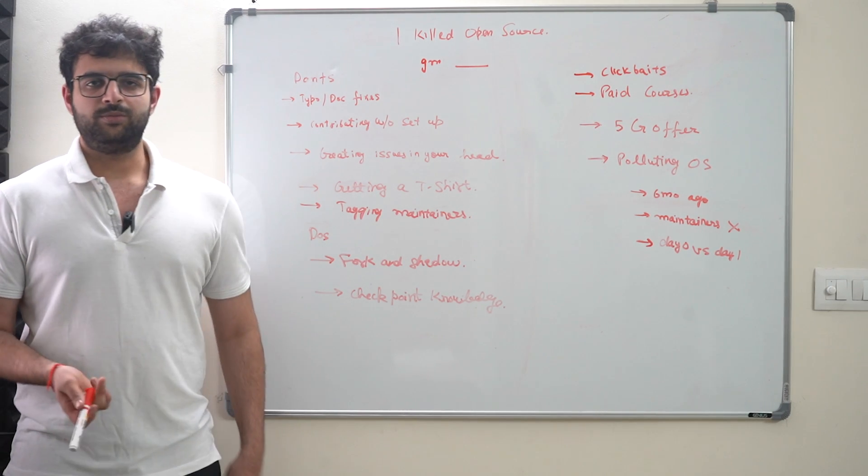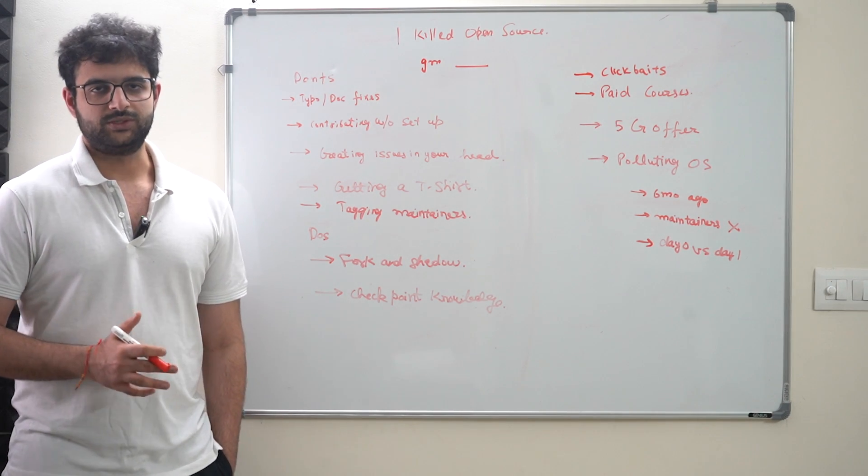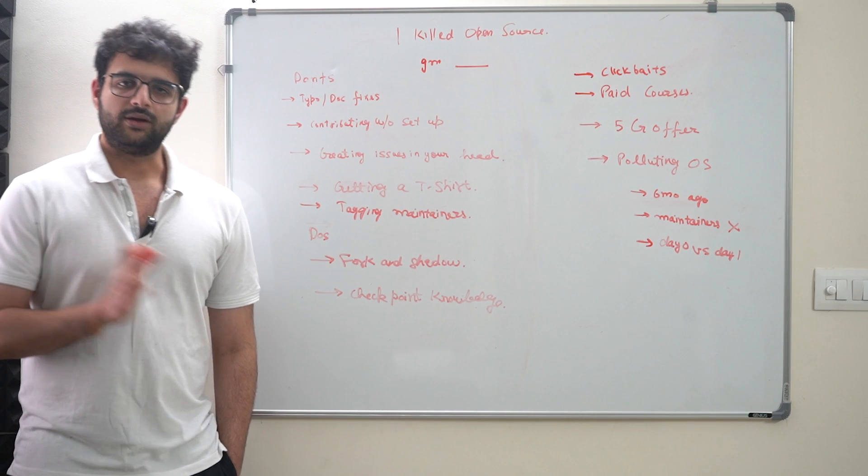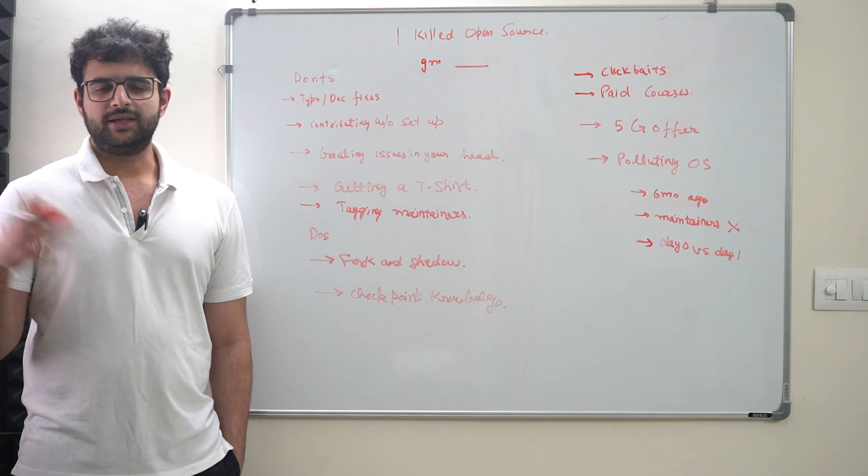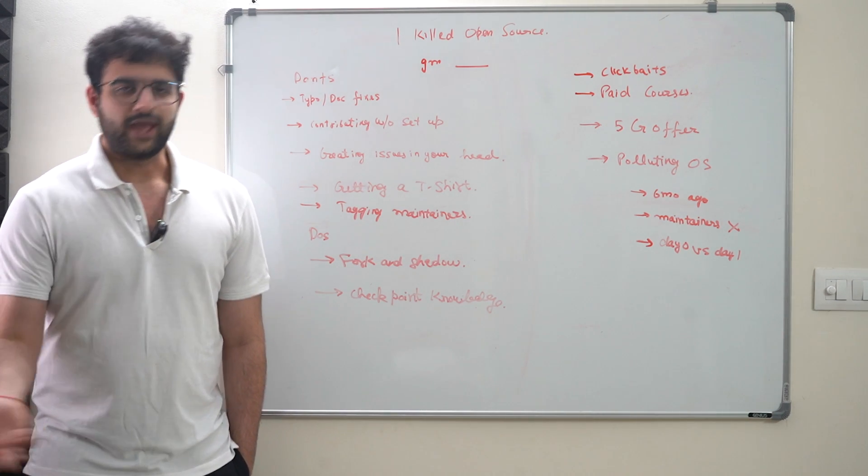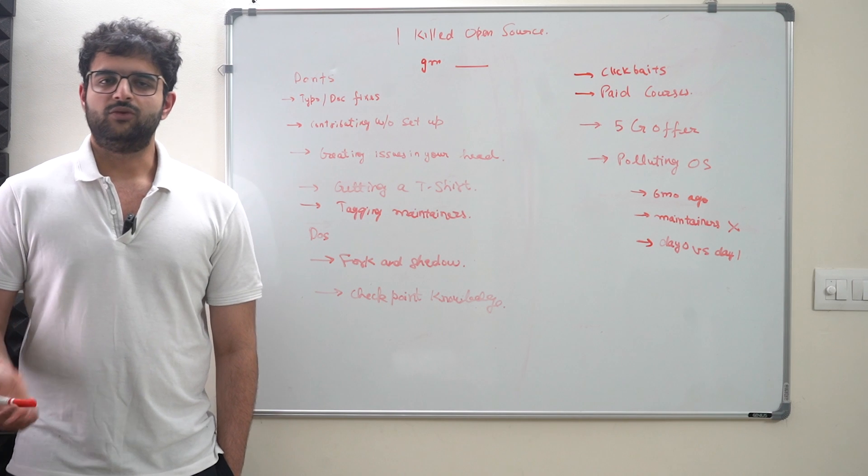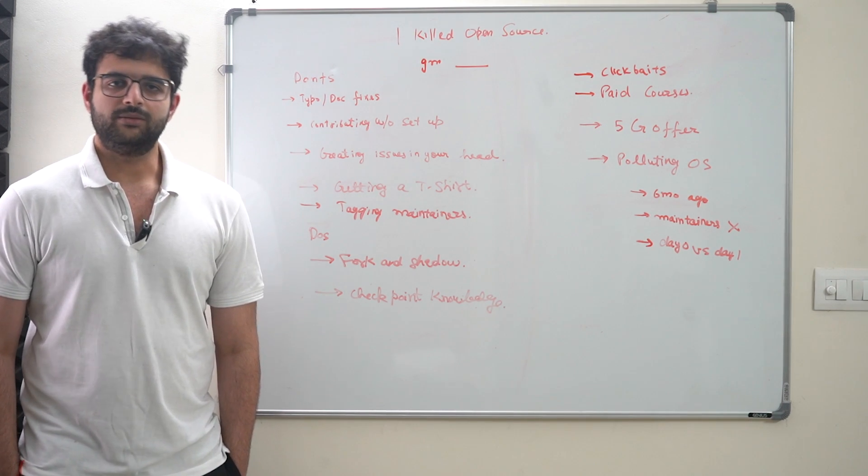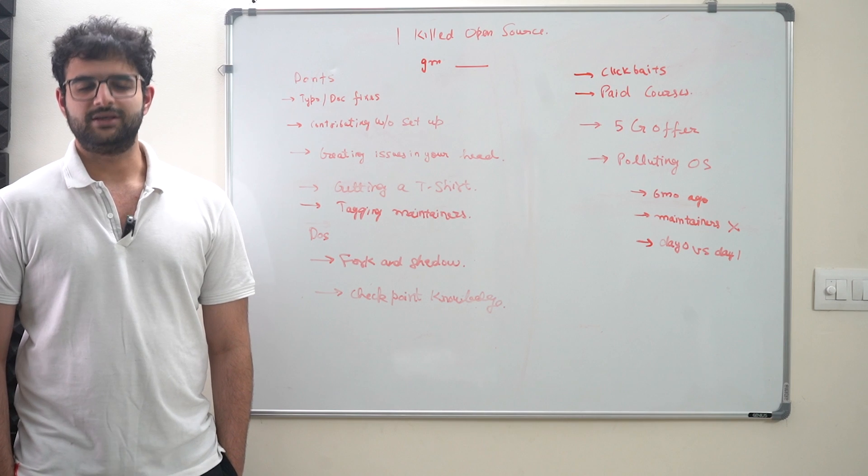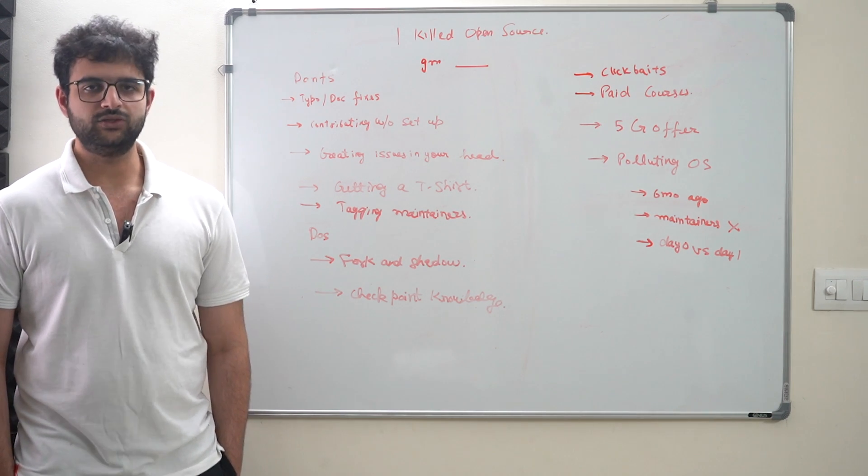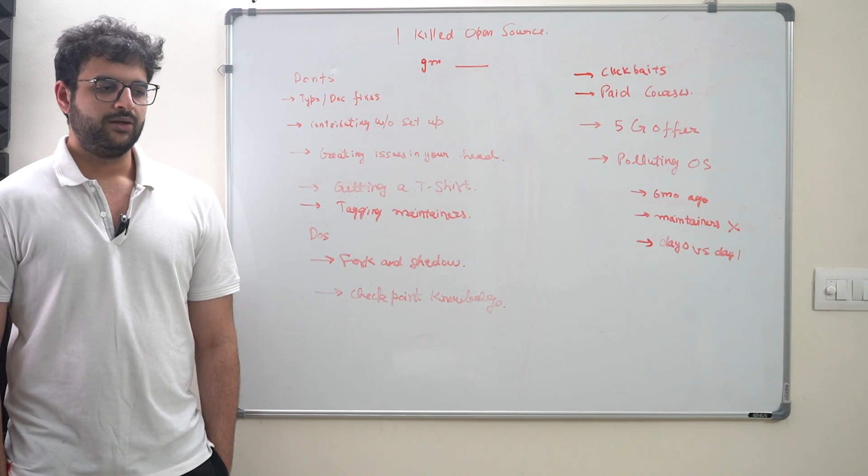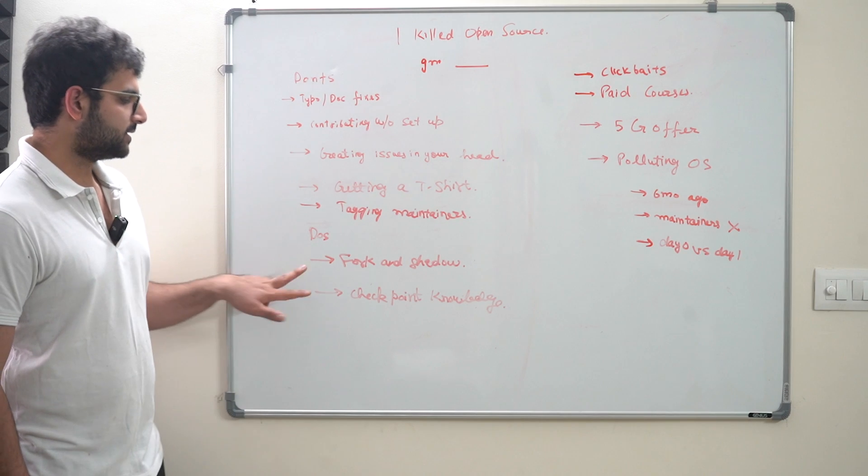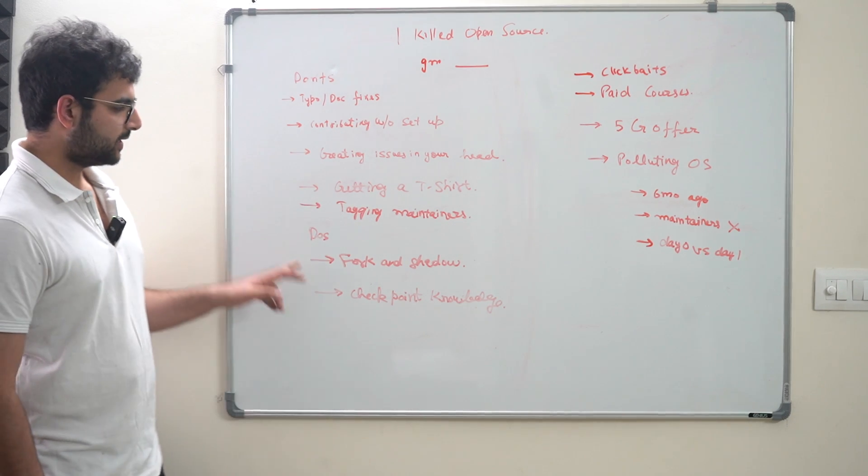A few do's. If you really want to pull some value out of open source, pull value in your learning. I'm not saying you can't get jobs by open source. You can. You can also get into GSOC by open source and other open source programs. But these are like one-time outcomes. This might be coming out of too much privilege here. GSOC is a big thing. Outreach is a big thing. Getting a job by open source is a big thing. Don't keep that as the goal though. Keep these two things as the goal. Everything else will be an outcome. What are the two things?